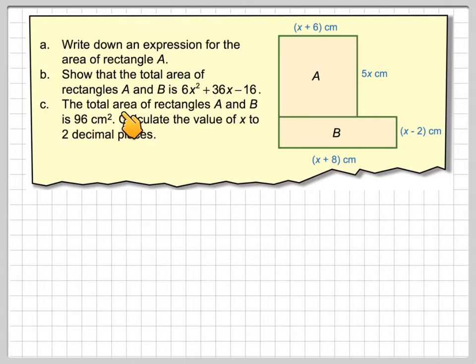And part C says the total area of rectangles A and B is 96 cm². Calculate the value of x to two decimal places.